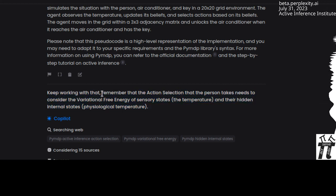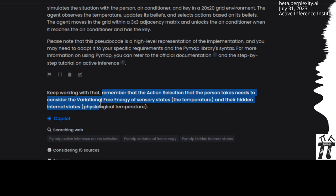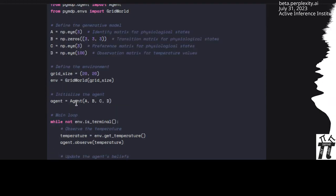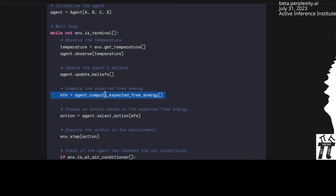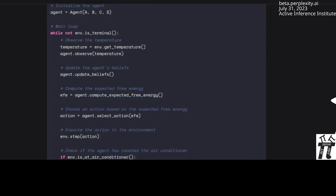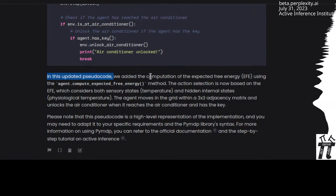I said keep working with that. Remember that action selection that the person takes needs to consider the variational free energy of sensory states, the temperature and their hidden internal states, physiological temperature. Copilot did a search, implemented the variational free energy. What was very interesting was in the code, it actually computed the expected free energy. I don't think it did variational at all.